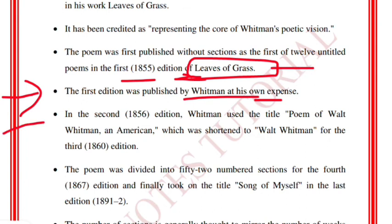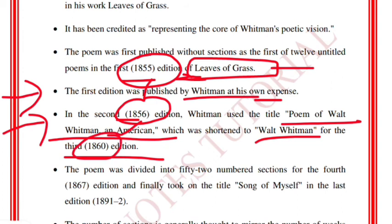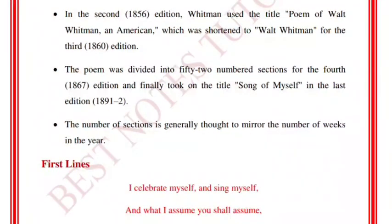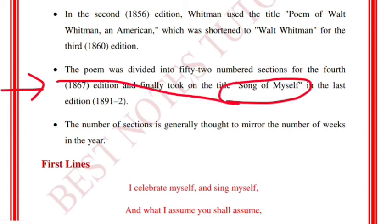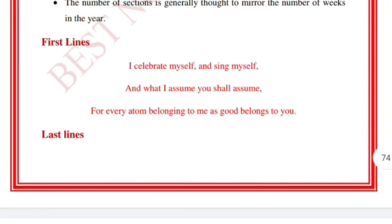In the second 1856 edition, Whitman used the title 'Poems of Walt Whitman: An American,' which was shortened to 'Walt Whitman' for the third 1860 edition. The poem was divided into 52 numbered sections for the fourth edition and finally took on the title 'Song of Myself.' The number of sections is generally thought to mirror the number of weeks in the year.